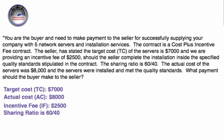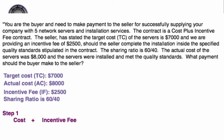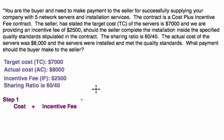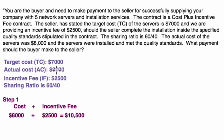Let's do our first calculation. We have one of four calculations to do. Step number one: since this is a cost plus incentive fee contract, we calculate the actual cost plus the incentive fee. The actual cost was $8,000 plus the incentive fee of $2,500, making it $10,500. We'll let that $10,500 sit while we work through the remaining calculations to get the final price.